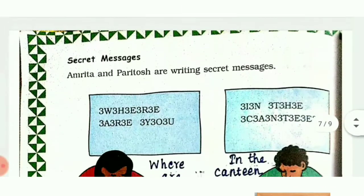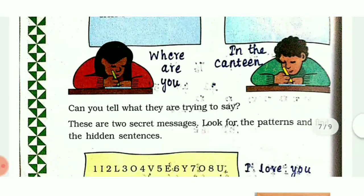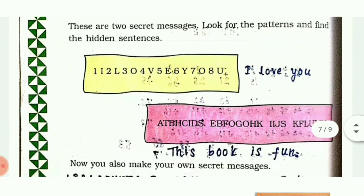Next is secret messages. Amrita and Paitush are writing secret messages. They have inserted the number 3 in between the letters of the message. The first message is 'Where are you?' The second person inserted 3s between the letters. These are two secret messages - look for the patterns and find the hidden sentences. The pattern inserts 1, 2, 3, 4, 5, 6 between letters - so the message is 'I love you.' The next one has an alphabet inserted between letters, so the message is 'This book is fun.'